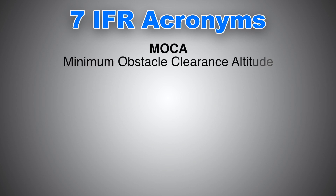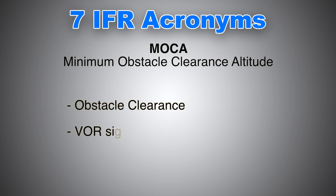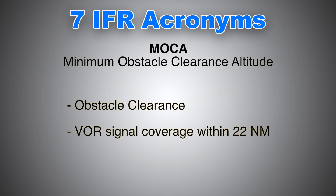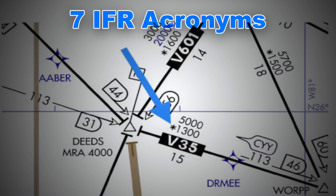Without any further ado, let's dive right in. The first acronym we're going to look at is MOCA, or Minimum Obstacle Clearance Altitude. This is the lowest published altitude between two VORs, victor airways, or off-road airways, to clear obstacles and still receive VOR signal coverage, but only within 22 nautical miles. It is usually lower than MEA. On IFR charts, MOCAs are depicted with a star or asterisk prefix.